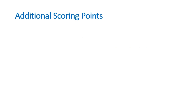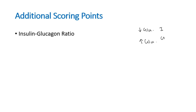For additional scoring points, consider the insulin-glucagon ratio. The main function of insulin is to store or decrease the level of glucose in the blood, whereas the function of glucagon is to increase it. During starvation, glucagon levels rise to release more glucose into the blood. In the fed state, insulin levels go up. There should be a fine balance between insulin and glucagon to keep blood glucose levels normal — that is the importance of the insulin-glucagon ratio.